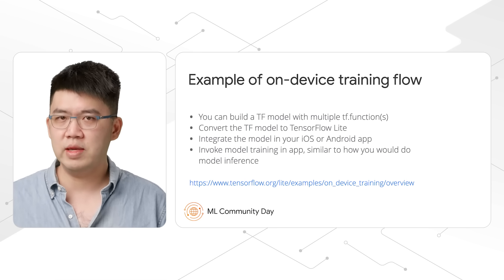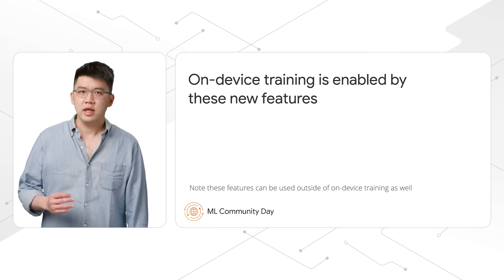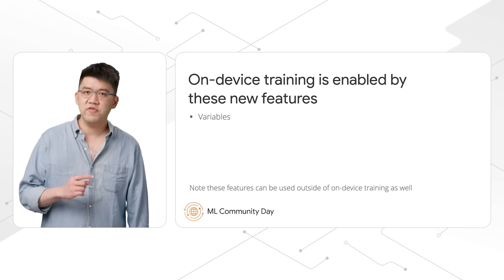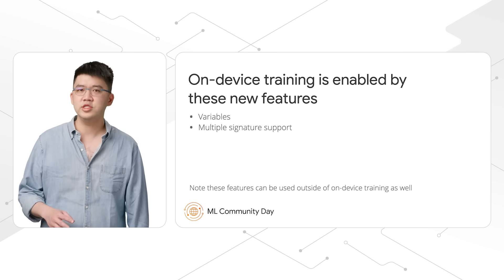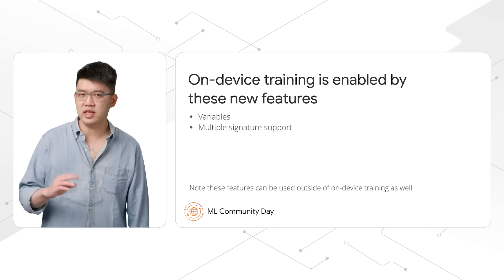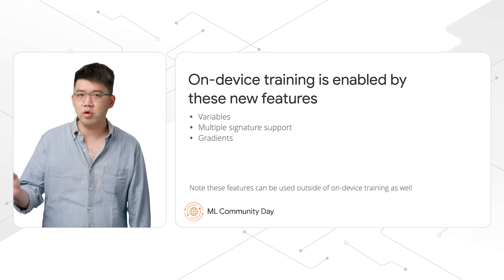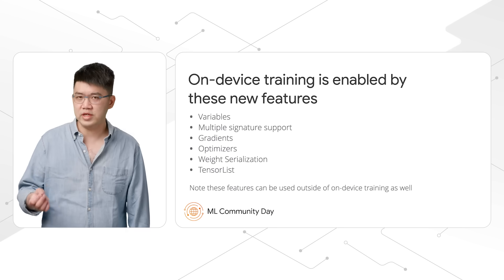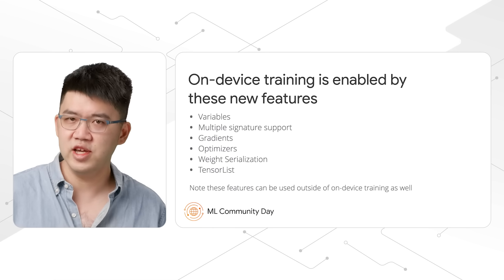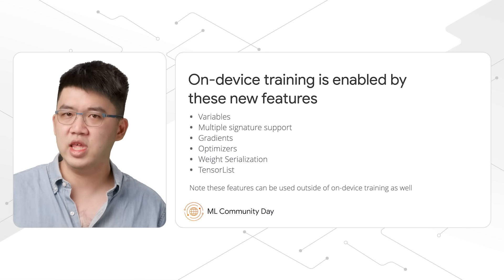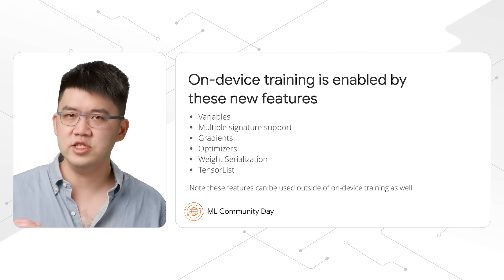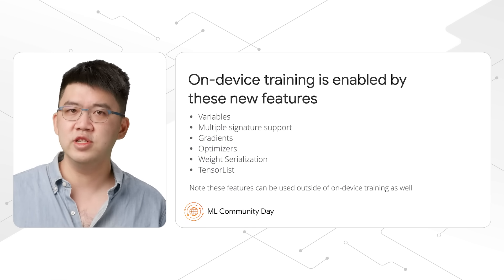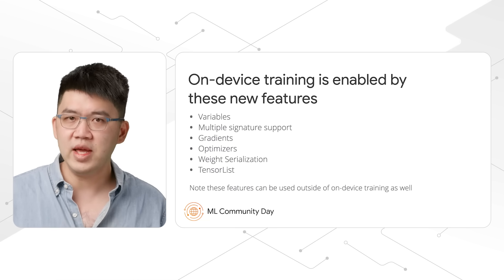You can also find the complete code lab example on the TensorFlow Lite on-device training page. In detail, on-device training is supported by implementing a set of low-level features. For example, we supported variables to store trainable weights, multiple signatures to run different functionalities like training and inference, and gradients for computing the backpropagation paths and optimizers to update the weights. Many of these features are also useful outside of on-device training. You can now use variables for stateful inference or ship a model with multiple different functionalities using the multiple signature support. Some of these features are achieved by reusing TensorFlow kernels with the select TensorFlow ops feature, and we are working on supporting more features in TensorFlow Lite natively to deliver even better performance and smaller binary size.